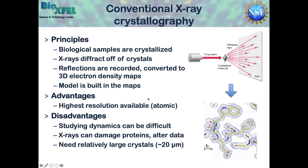In conventional X-ray crystallography, the principle is that we are coercing our protein molecules to form a 3D array such that we can illuminate it with a focused, intense X-ray beam, rotate it through the beam, collect reflections, and then using Fourier transforms, convert this into a 3D electron density map — the blue mesh you're seeing in the figure — and using that data, build a model, which is the yellow stick model, which is probably what you're more familiar with seeing in primary literature and textbooks.